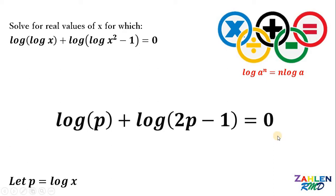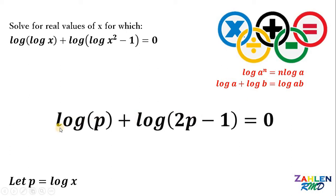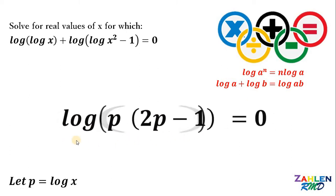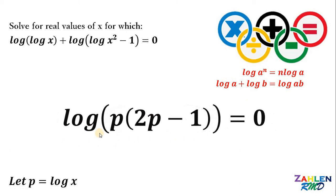Now let's use a property of logarithms. If we have logarithm of a plus logarithm of b, it is equal to logarithm of a times b. Therefore, the left-hand side of our equation becomes logarithm of p multiplied by (2p minus 1) equals 0.